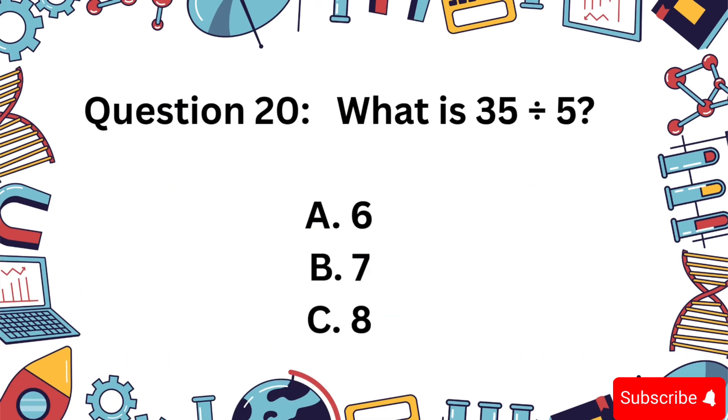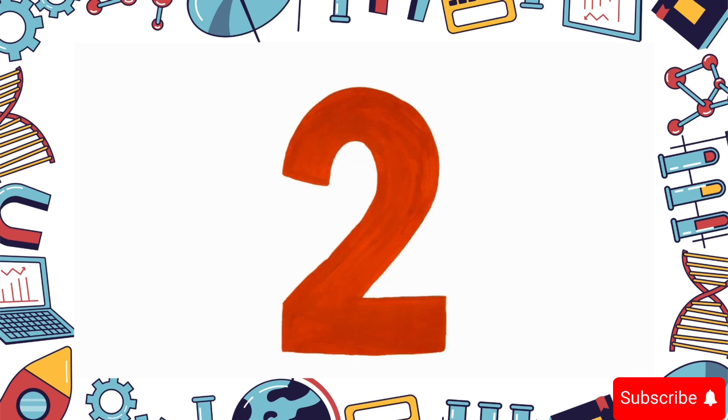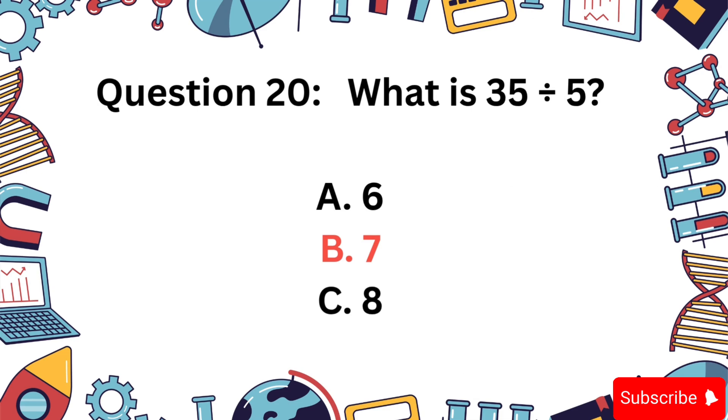Last one. 35 divided by 5. Is it A, 6, B, 7, C, 8? And the final answer is B, 7.